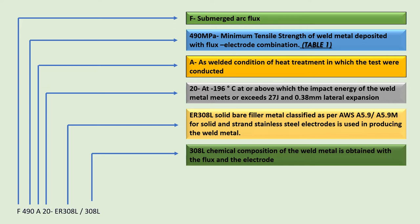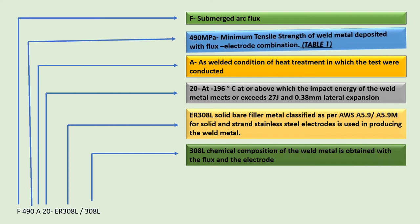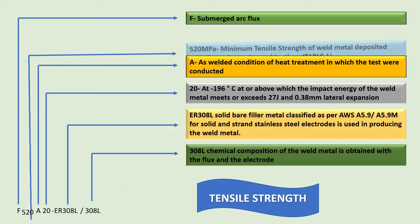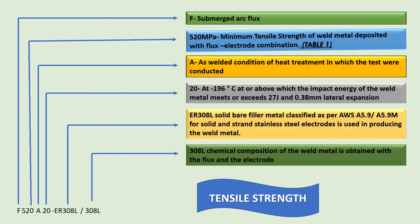308L indicates the chemical composition of weld metal obtained with this combination of flux and electrodes. Let us see what changes are there in the designator when the minimum tensile strength requirement changes. The three digits after F undergo the change. For example, if we change the minimum tensile strength requirement from 490 MPa to 500 MPa, this is the change that can be observed.